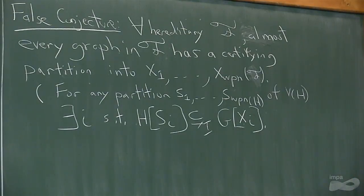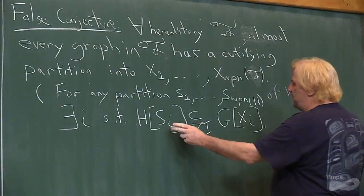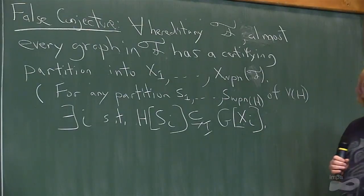I just have to look inside the partition elements to determine that H is not an induced subgraph. Whatever edges we put between the partition elements, we still can't get H. Because whenever we partition H into WPN of H pieces, there's one piece which is not an induced subgraph of the corresponding piece of G.